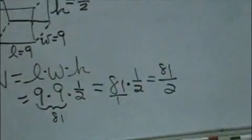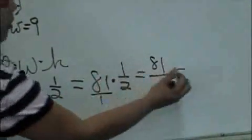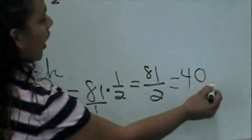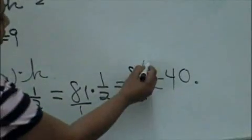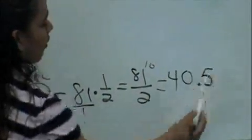And if we simplify, divide 81 by 2, 2 goes into it 4 times. 2 does not go into 1, so we're going to put a 0 and add our decimal place. So now we have 1 extra, which is 10, and 2 into 10 would be 5.